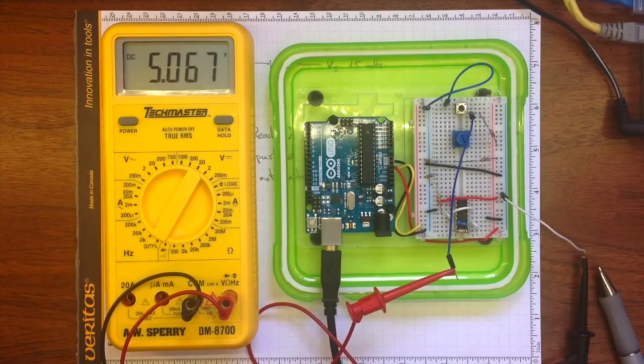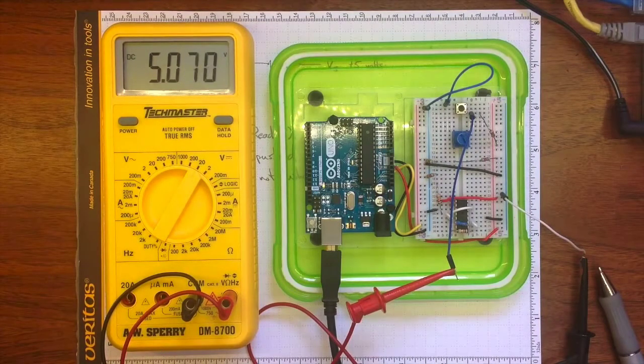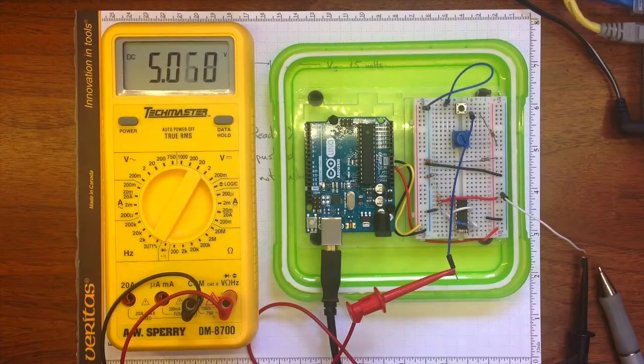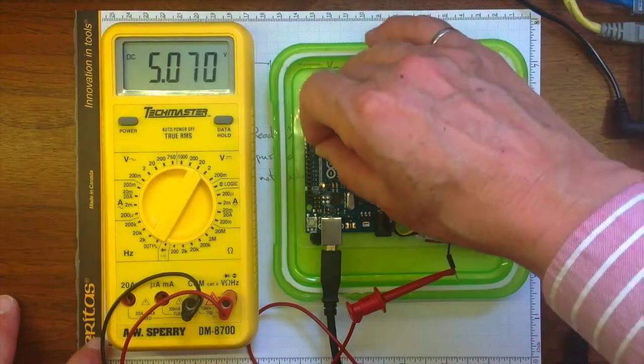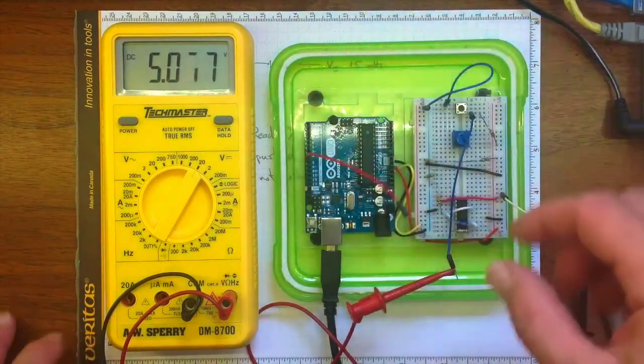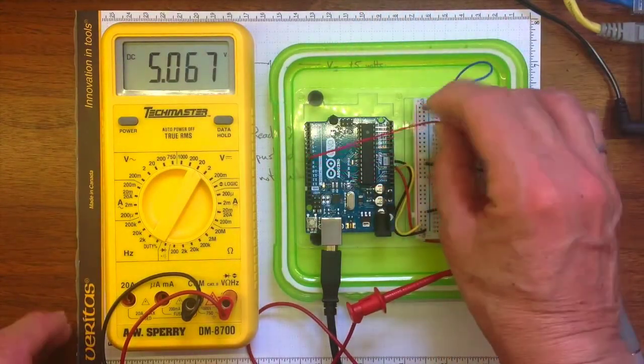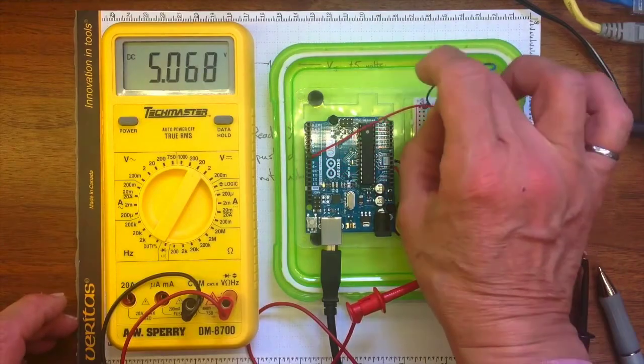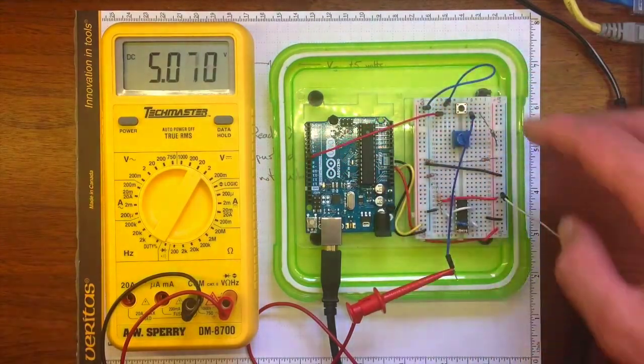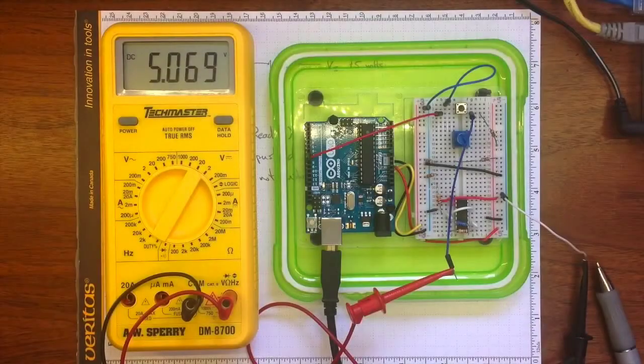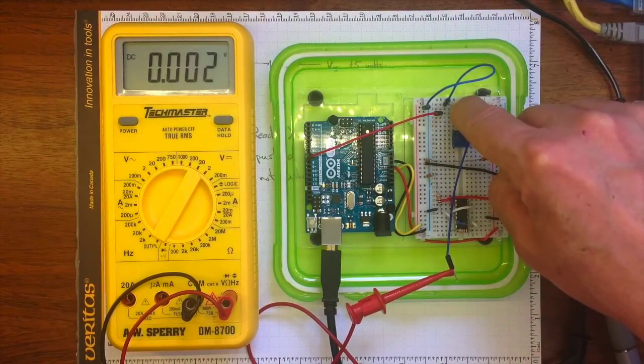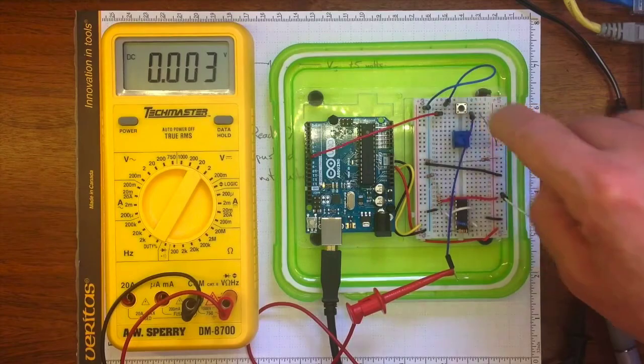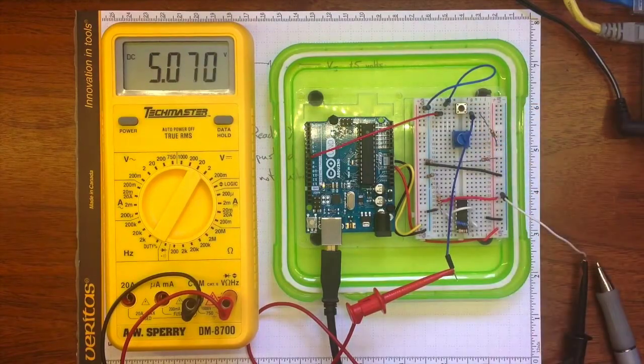If I want to read the state of that button on pin number 7 on the Arduino, then I'll need to plug this lead into pin number 7, and also connect it over here to this side of the push button. And now when I press that button, pin number 7 will be grounded. When I release the button, pin number 7 will have 5 volts on it.